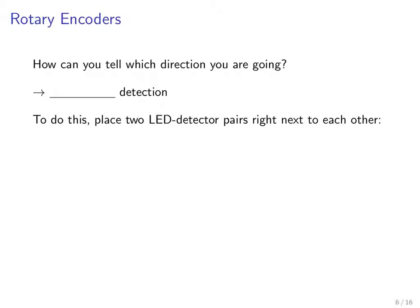That measurement can tell you the total angle through which you have gone in any given period of time. But how can you tell which direction, which angular direction you're going, which way the wheel is spinning? To do that, you need what's called quadrature detection.